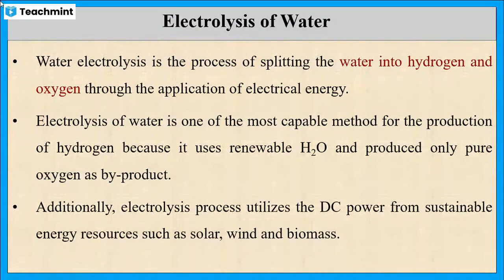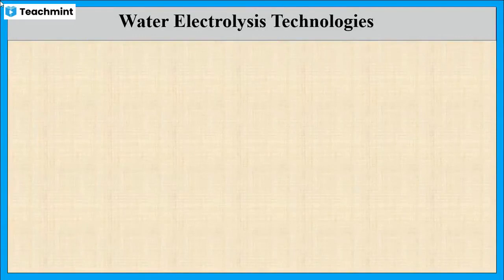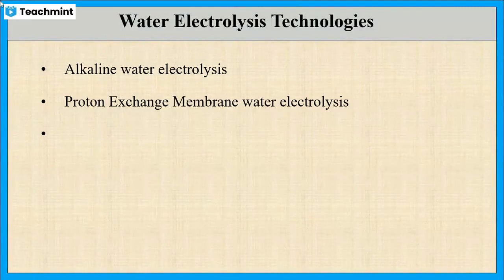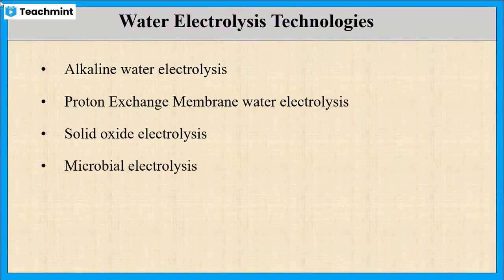There are different methods for the electrolysis of water. Those are alkaline water electrolysis, proton exchange membrane water electrolysis, solid oxide electrolysis, and microbial electrolysis.